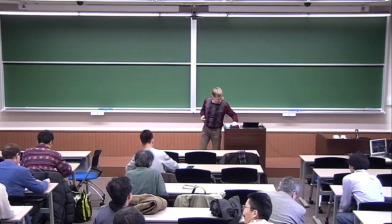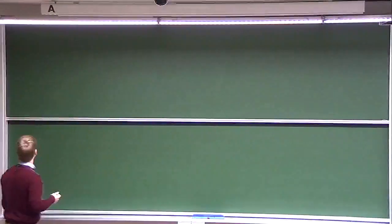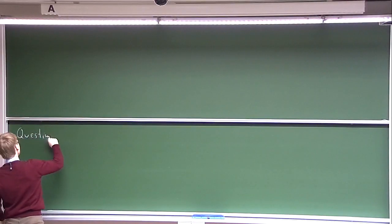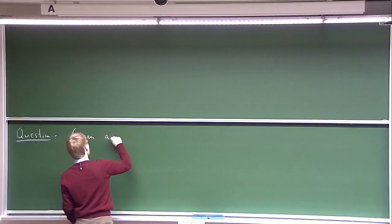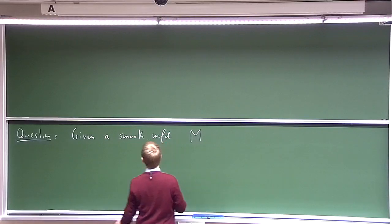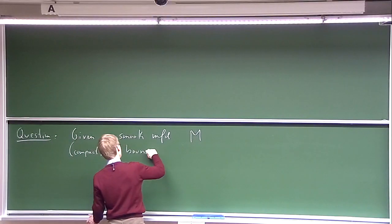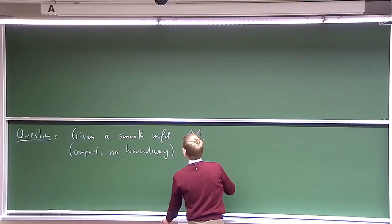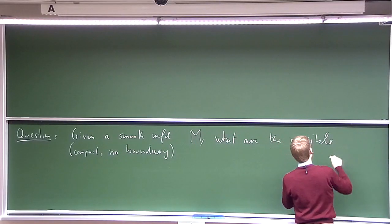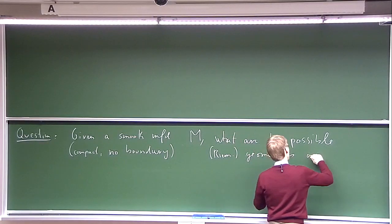Let's get started with the math. I want to describe one of the geometric questions to which index theory is applied. The question at large would be: if you're given a smooth manifold M, let's say compact with no boundary, what are the possible geometries on M?